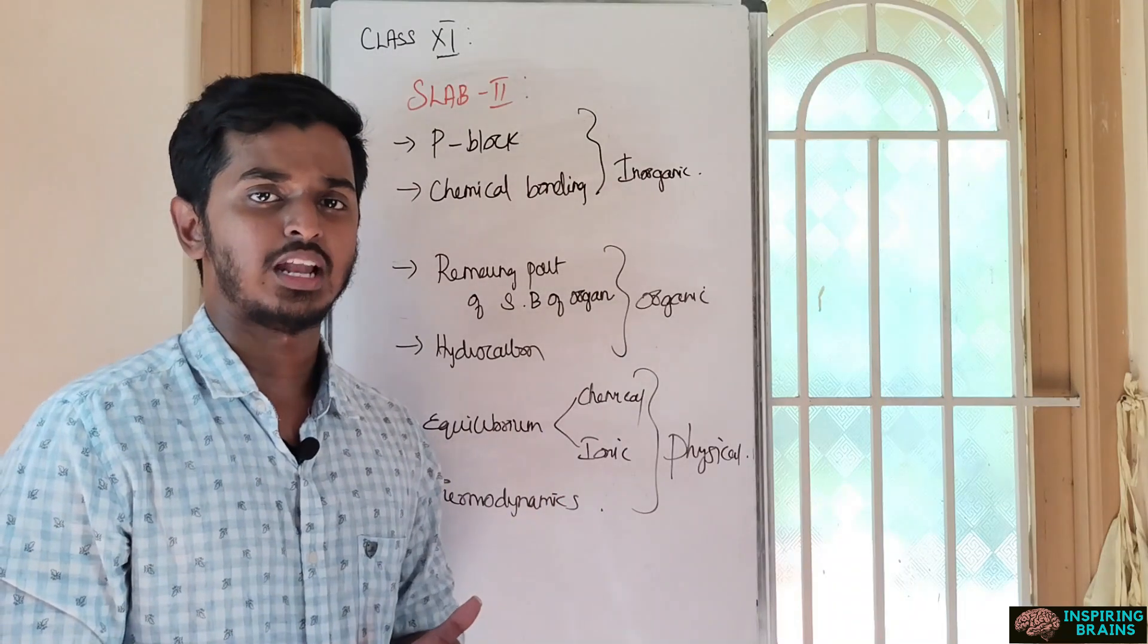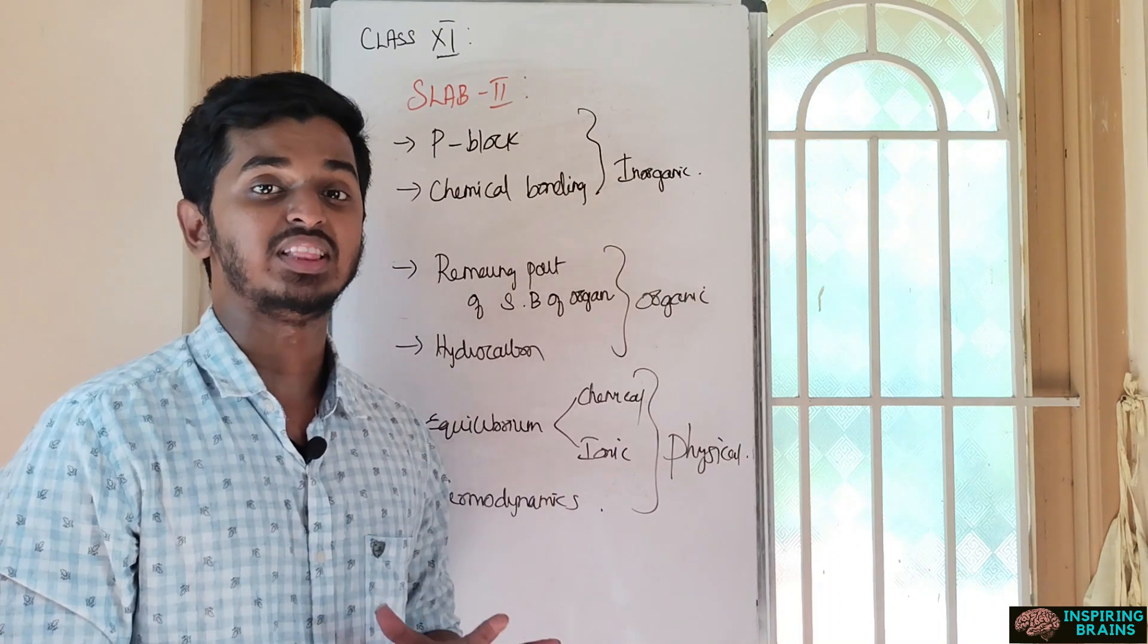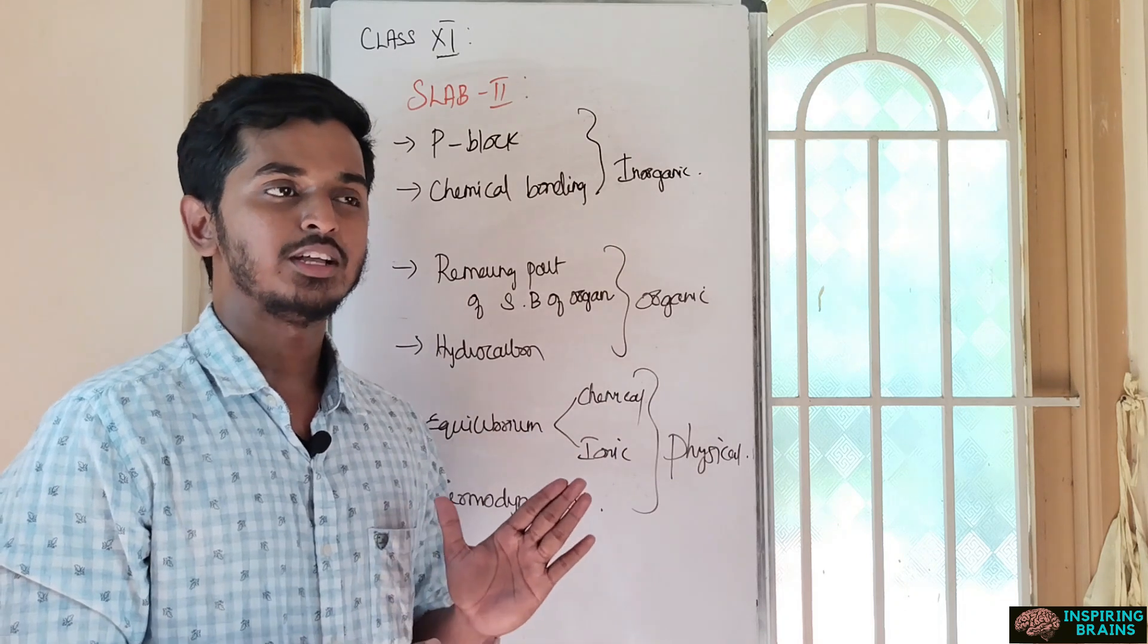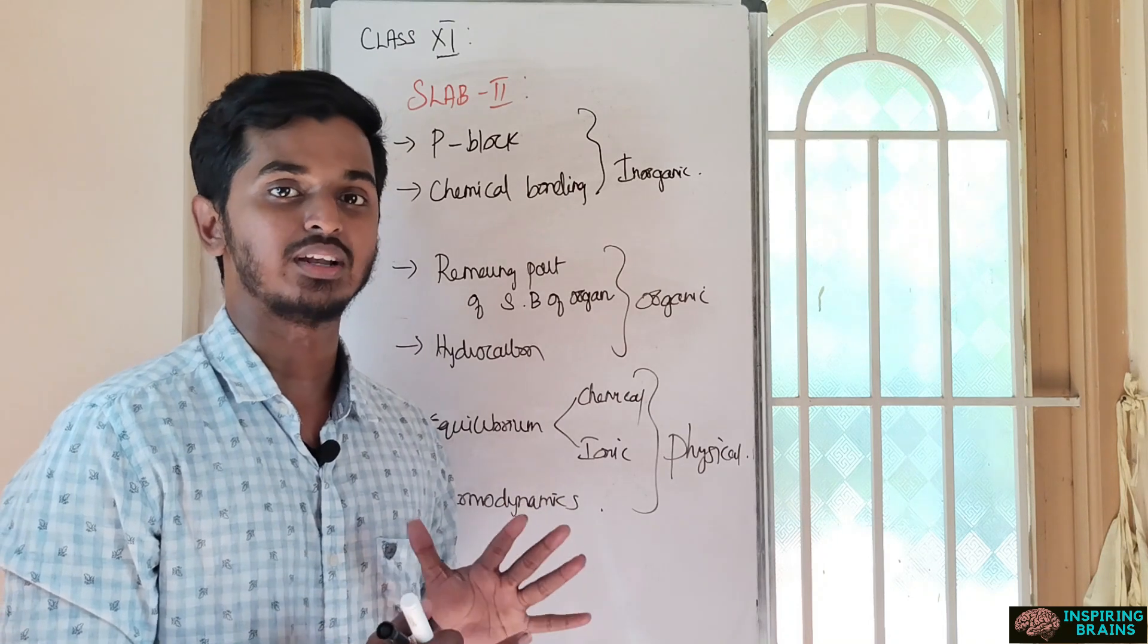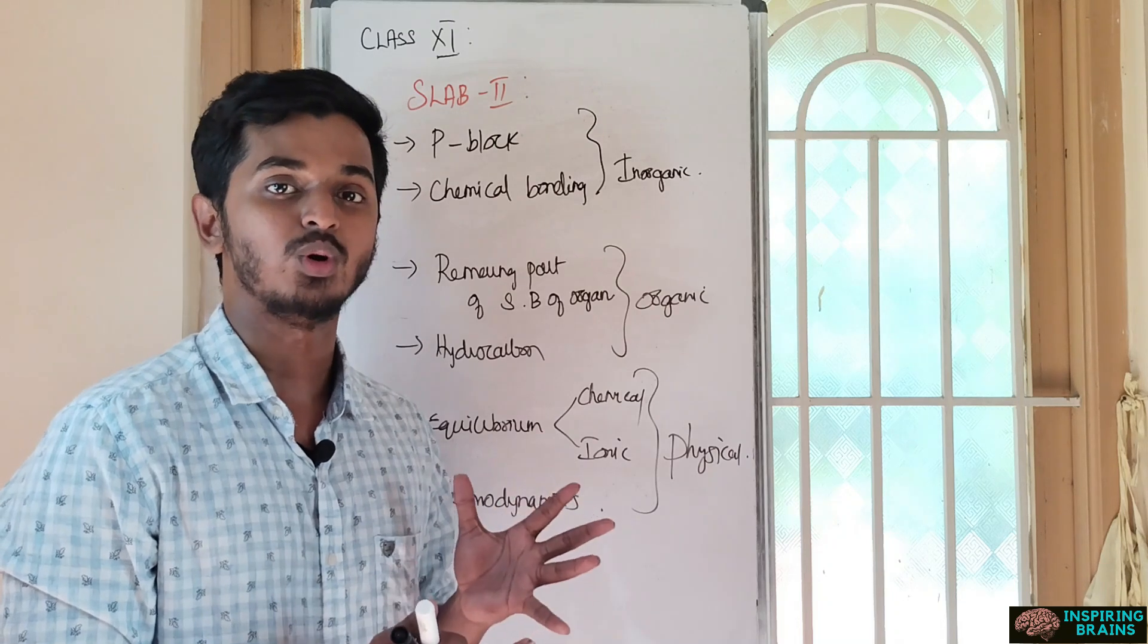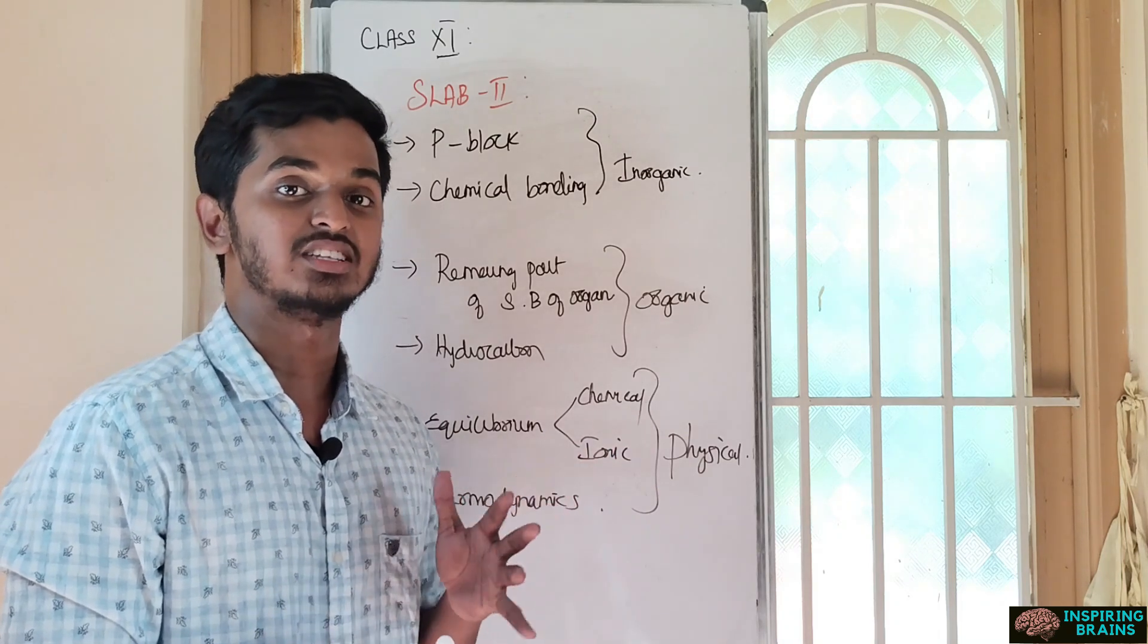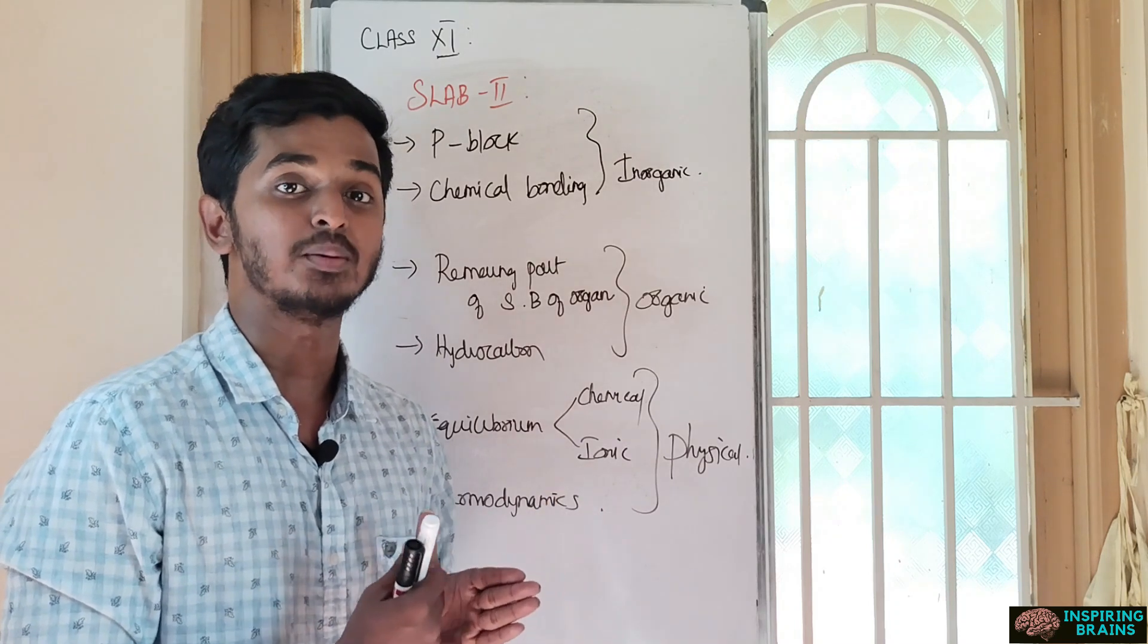This is all for slab one and slab two. Once you covered both things, then all chapters of 11th chemistry will be in your pocket. You can easily score more marks. First go with slab one, then slab two. It's based on percentage and also on how you can clear chapters. Some chapters, though they weigh more, are difficult to understand in a short span of time. Hence I scheduled it so anyone can start studying slab one units, whereas slab two needs some time and basics.